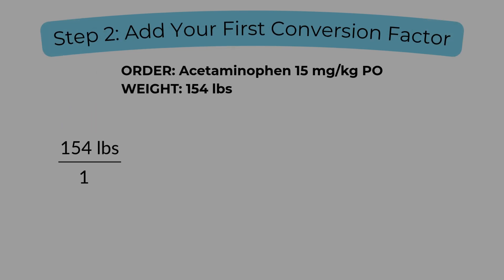Now let's move on to step two: add your first conversion factor. Right now we're working with pounds, but the medication is dosed in milligrams per kilogram, so we need to convert pounds to kilograms. To do that, we multiply by the standard conversion: one kilogram over 2.2 pounds. This lets the unit of pounds cancel out and brings us one step closer to matching the dose in milligrams per kilogram. Every conversion factor is a building block, and canceling units is how you know you're stacking them in the right order.